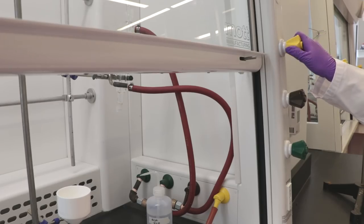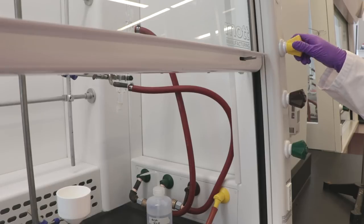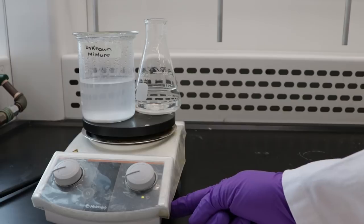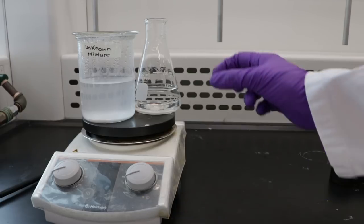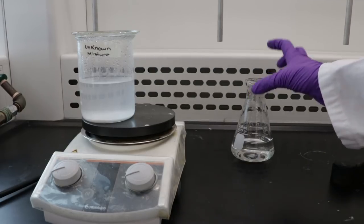Turn the yellow knob all the way to the left to start vacuum suction. Turn off the hot plate. Take the solutions off to cool.